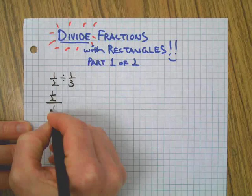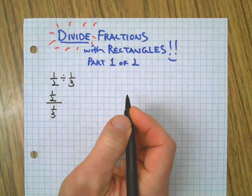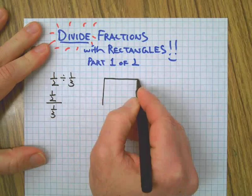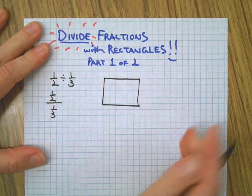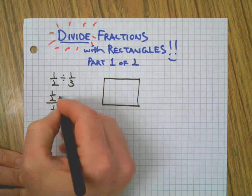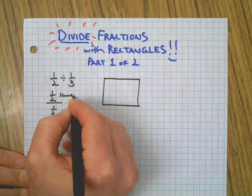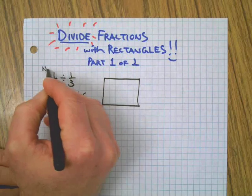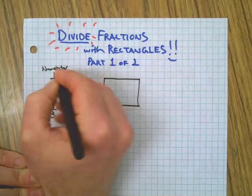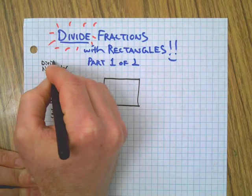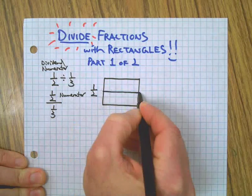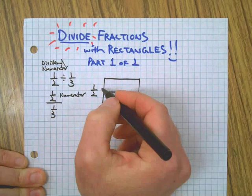This can also be written like this as a complex fraction. Now we're going to start with a rectangle, just a generic rectangle. You don't need to measure it or anything like that. We're going to take the numerator, or the first fraction in a problem like this, also called the dividend.